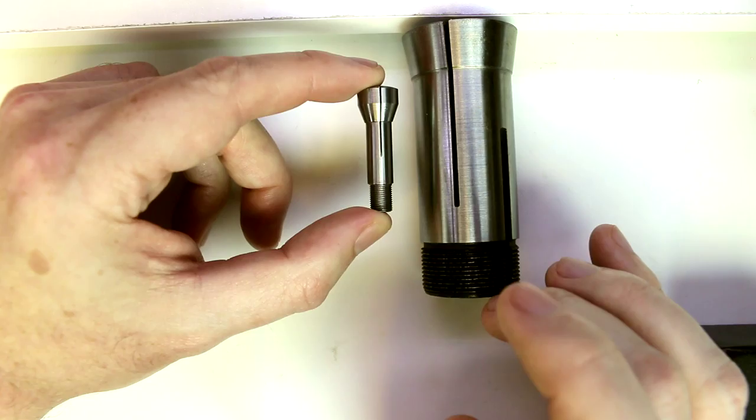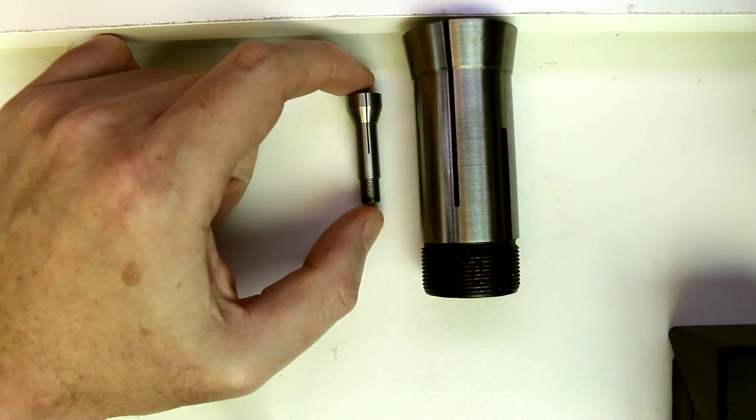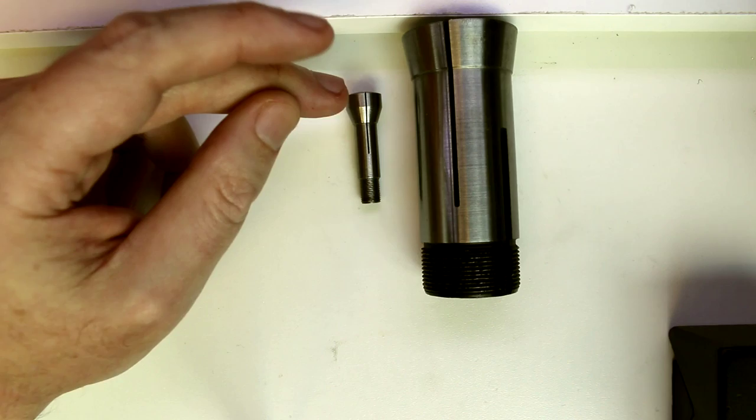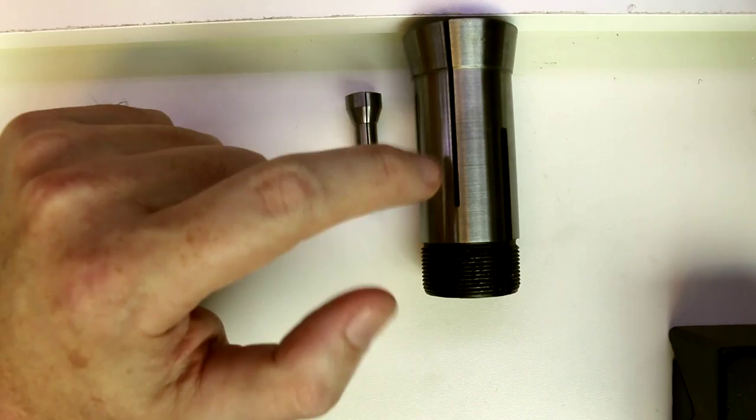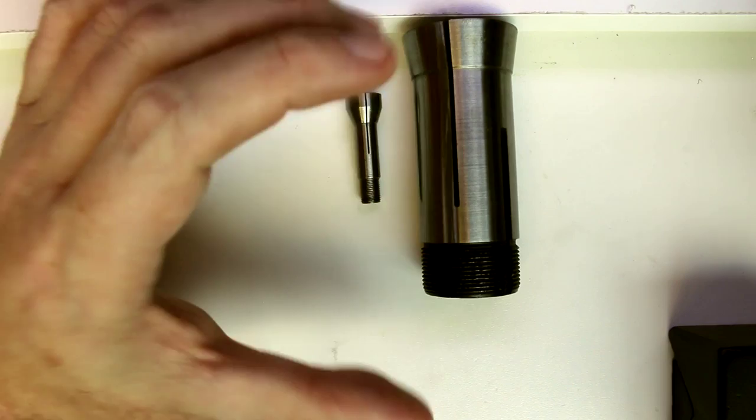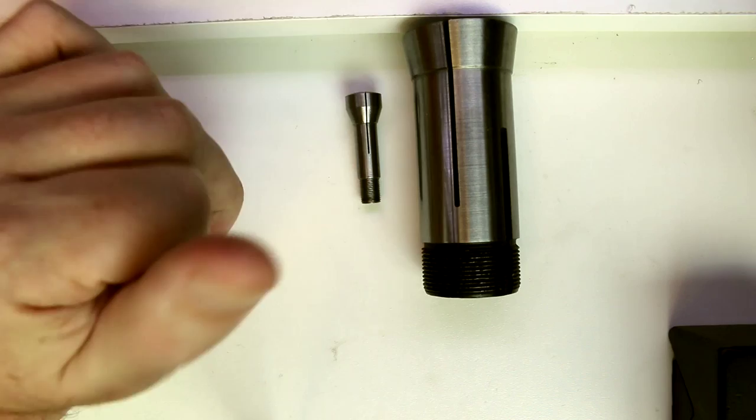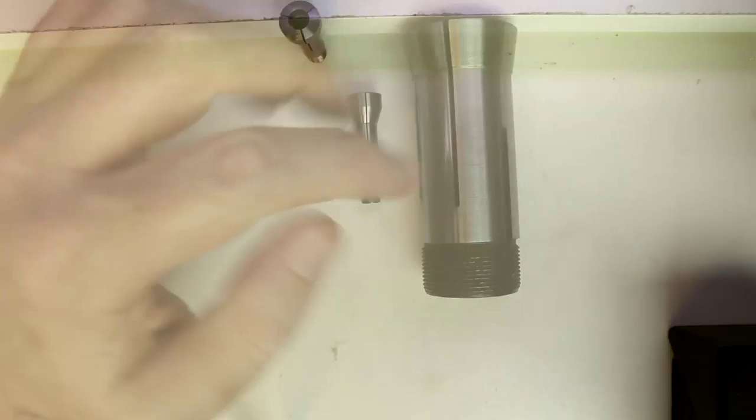The ER collets, which if you just do a Google search you'll be able to find pictures of them, they actually allow for a wider adjustment range because they have many more grooves cut into them and grooves cut from both directions. So that allows it to expand and contract quite a bit more. Again, if you're going to be dealing with a larger lathe and needing that larger capacity, then these are some of the options you have.